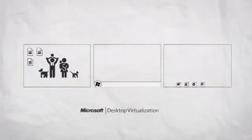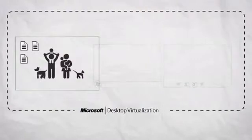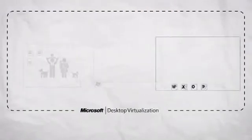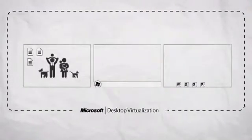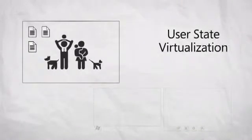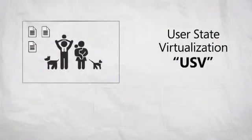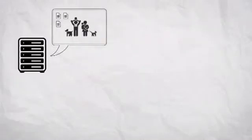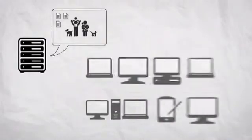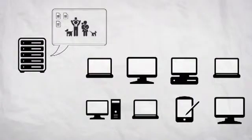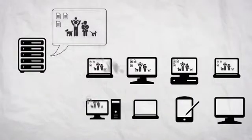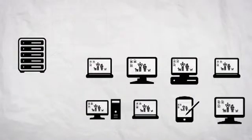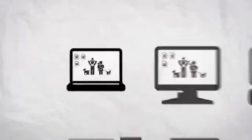We offer solutions at every layer to help you realize the benefits of desktop virtualization and solve your specific business needs. Let's start with User State Virtualization, or USV. USV enables user information, profiles, documents, and more to be stored in a centralized data center, making them accessible to users from any corporate PC. This means settings and data, secure and up-to-date, are instantly available to your users wherever and whenever they need it.